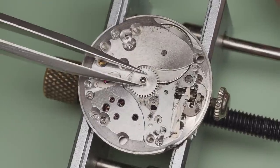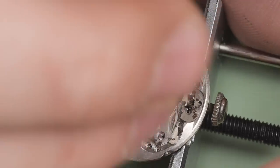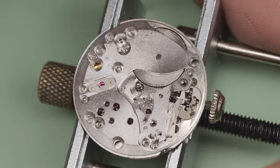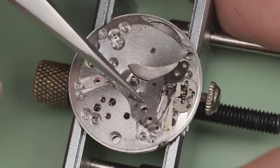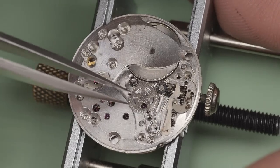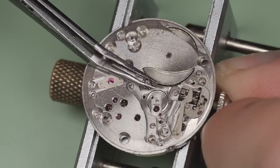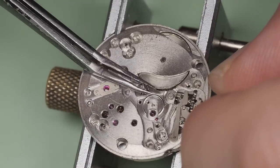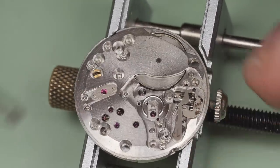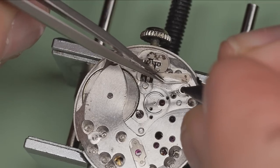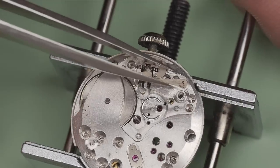Disassembly of the dial side begins with the dial washer and the hour wheel. The two screws securing the setting lever spring are removed. The minute wheel is taken out followed by the setting wheel. Using angled tweezers as a lever, I can pull the canyon pin from its pivot.